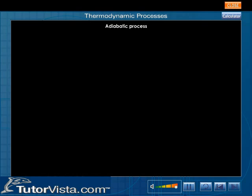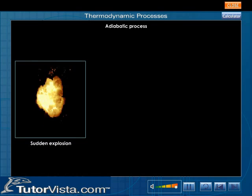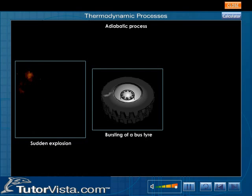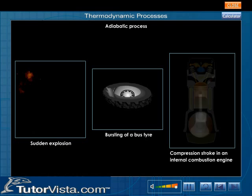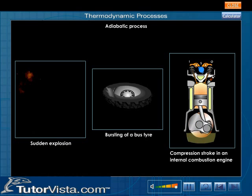Examples for adiabatic processes are the sudden explosion, bursting of a bus tire, and the compression stroke in an internal combustion engine. There is no exchange of heat between the system and the surroundings, so delta Q is equal to zero.